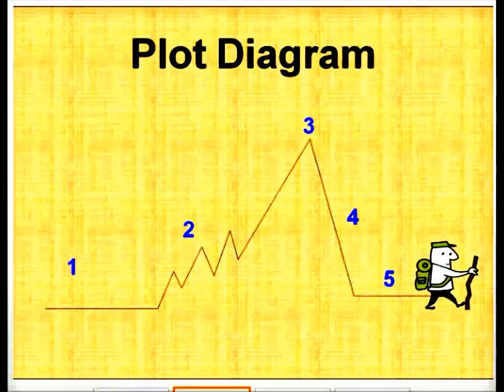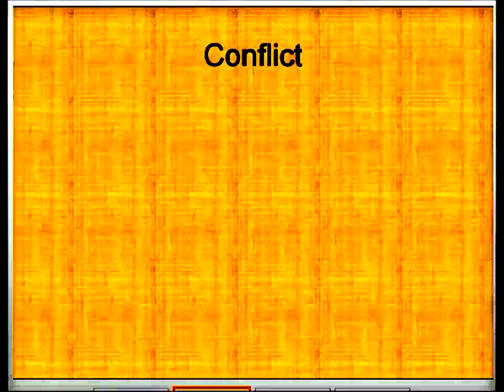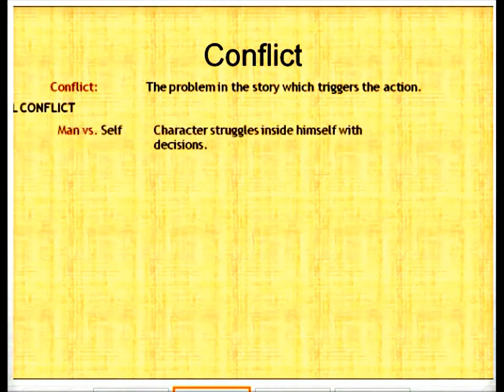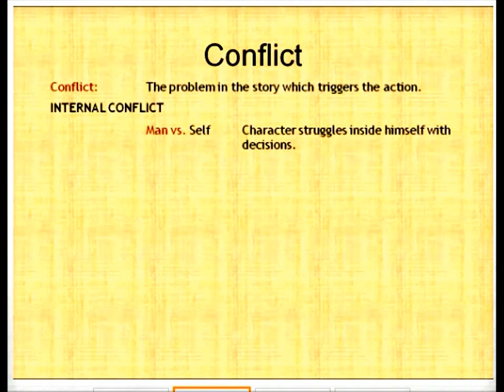Now we're going to discuss different types of conflict. There are two different types: internal conflicts and external conflicts. The first we're going to discuss is internal conflict. But first, what is conflict? Conflict is a problem in the story which triggers the action. The first and only type of internal conflict is man versus self. This is when a character struggles inside himself with decisions.